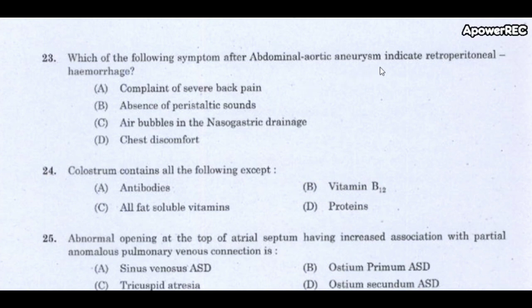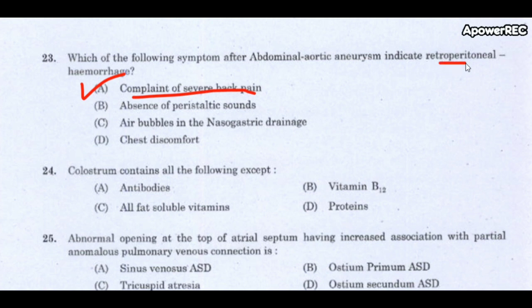Next question: which symptom after abdominal aortic aneurysm indicates retroperitoneal hemorrhage? The correct answer is complaint of severe back pain, because the retroperitoneum is behind the peritoneum. Abdominal aortic aneurysm is an enlargement of the aorta, the main blood vessel delivering blood to the body at the level of the abdomen.